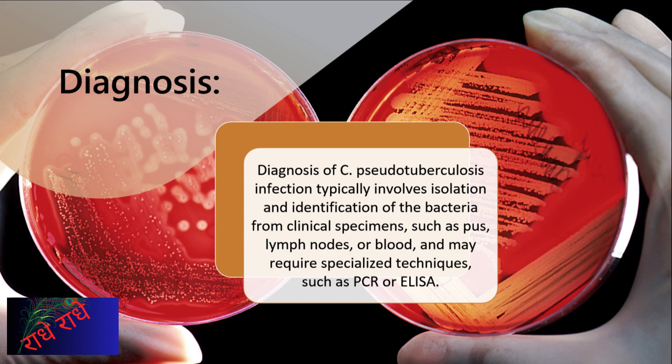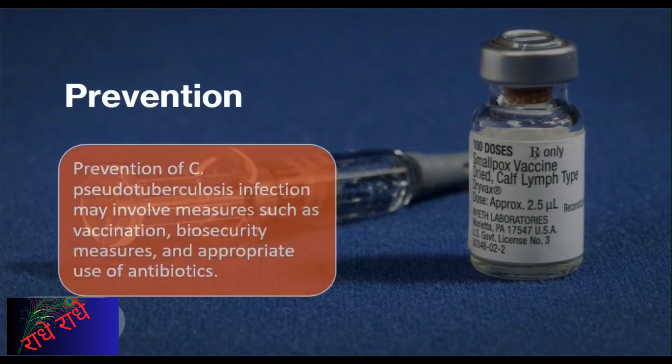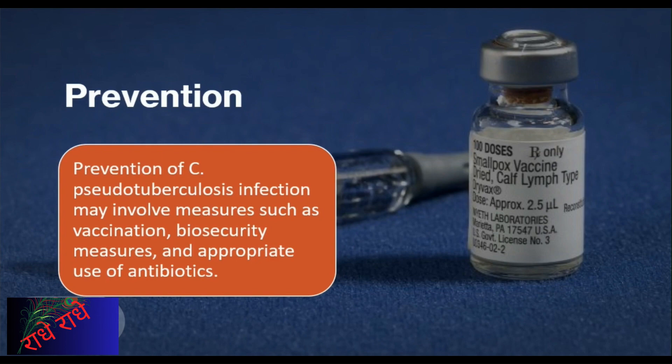Regarding prevention of Corynebacterium pseudotuberculosis infection, vaccinations, biosecurity measures, and the appropriate use of antibiotics can all be employed. Vaccinations help ensure disease has not spread in animals, and any vaccinations should be kept up to date. Additionally, biosecurity measures including monitoring of stock and quarantining of new arrivals to the farm can reduce spread of infection. Finally, antibiotics should be used where necessary to treat the infection.